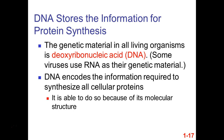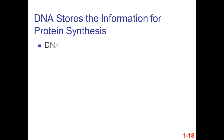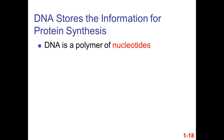DNA is able to do this because of its structure — thanks to Watson and Crick and the people they spied on. Rosalind Franklin gets credit nowadays — she worked hard and they spied on her work to figure out the structure of DNA. DNA is a polymer made of many repeating subunits called nucleotides.